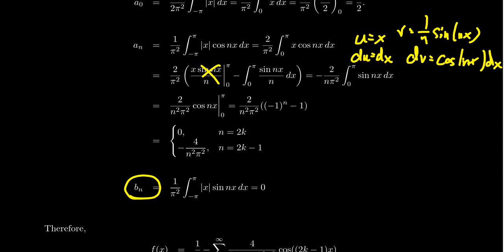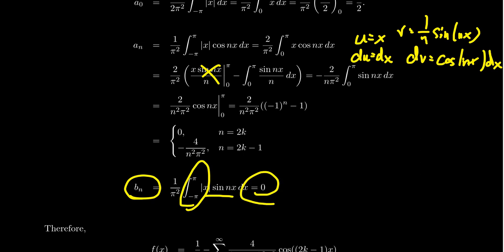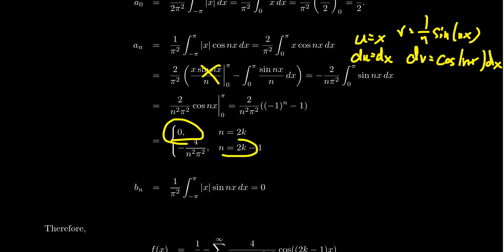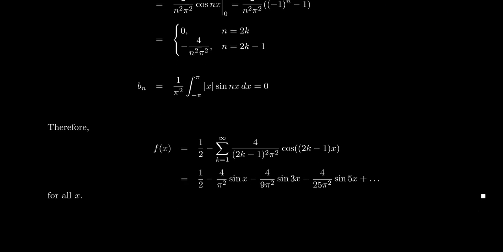For bₙ, we need one over pi times the integral from negative pi to pi of |x|·sin(nx) dx. Since |x| is an even function and sin(nx) is an odd function, their product is an odd function. The integral of an odd function over a symmetric interval is zero. Therefore all bₙ = 0 — no antiderivative calculation is necessary.